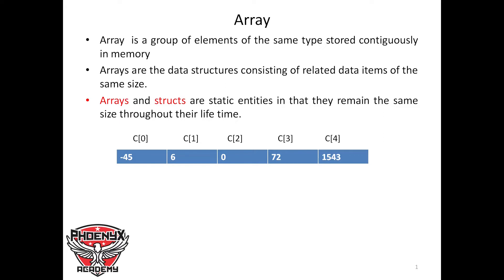Arrays, and another data entity called struct, are static entities in that they remain the same size throughout their lifetime. We will consequently come to look at struct, but for now we are going to take a look at what arrays are and how we can make use of them in our C code.